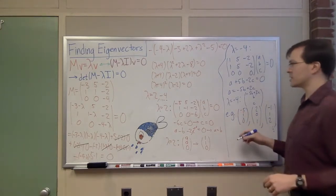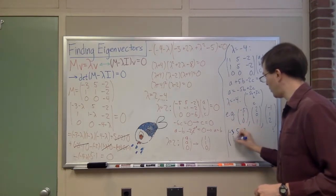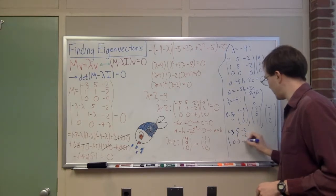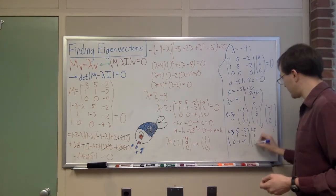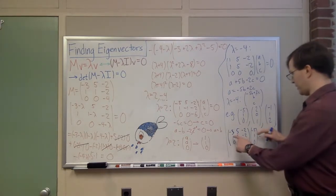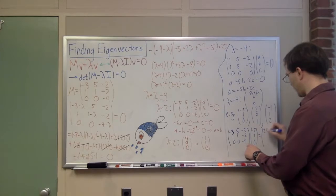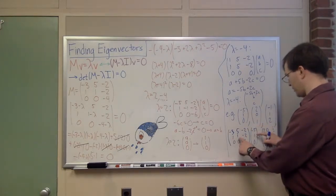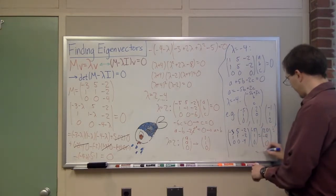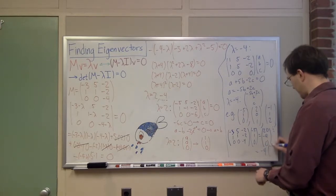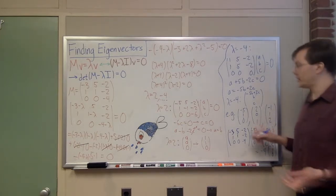Let's just double check that, just to see how it works. If I do -3, 5, -2, 1, 1, -2, 0, 0, -4, times this one, -5, 1, 0. That's going to give me, okay, that's 15 plus 5 is 20. So it's going to give me 20. And here I'm going to get -5 plus 1 is -4. And here I've got 0. And this is exactly -4 times -5, 1, 0. So that works. Yay! This one was, in fact, an eigenvector with eigenvalue -4.